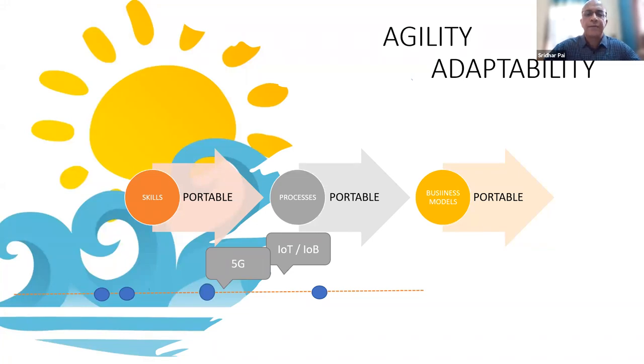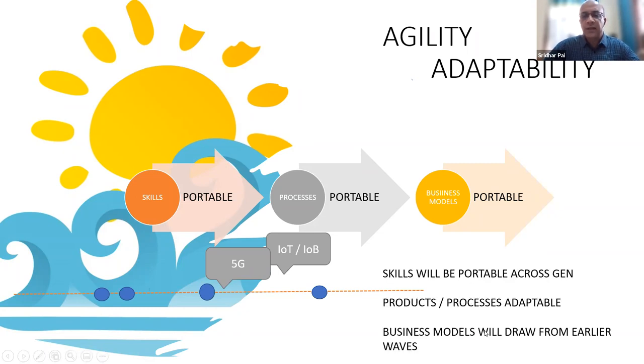So this is probably what he meant when he said it is going to be adaptable. This is probably what he meant when he looked behind - the dots will be connecting the dots, make sense. So processes will be portable and business models will be portable. Let me go on to the next slide.